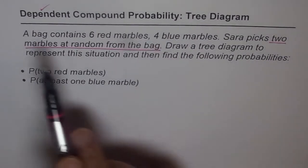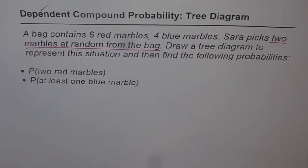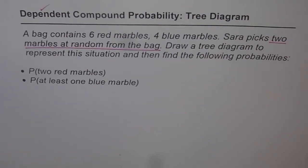So it is a compound probability case with dependent events. If she picks red first, then there will be one less red marble. The total number of marbles will also be reduced by 1 for the second pick. Therefore, the probabilities for the second pick are influenced by the first draw — the second is dependent on the first result. That is the huge difference between this question and the previous one.